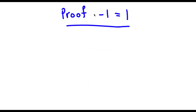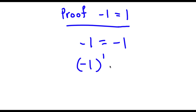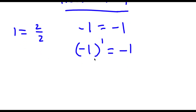Alright, so now I'm going to prove that negative 1 is equal to 1. Let's first start off with negative 1 is equal to negative 1 — a true statement, because any number equals itself. Now, negative 1 is the same thing as negative 1 to the power of 1, since any number to the power of 1 equals itself. And 1 is the same thing as 2 over 2, so I replace the exponent 1 with 2 over 2, giving negative 1 to the power of 2 over 2 is equal to negative 1.